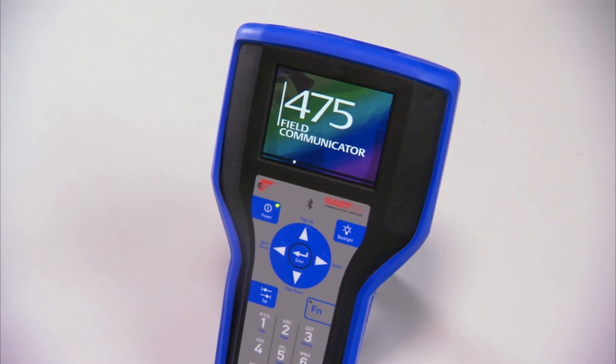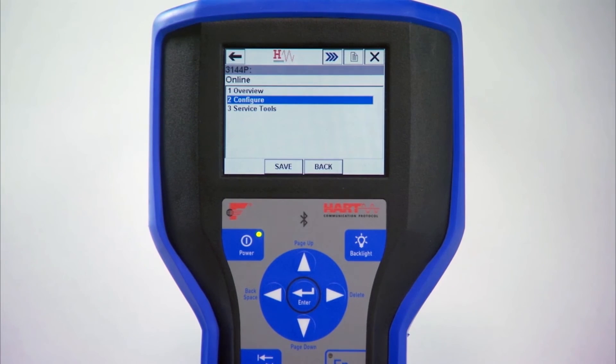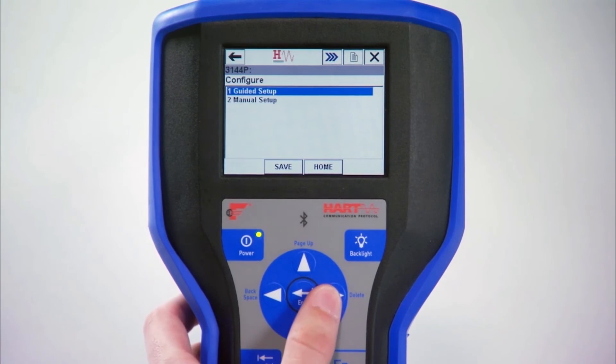First, attach the communicator to the transmitter's power inputs. Note that between 250 and 1100 ohms resistance must be in series for correct functioning. From the home screen on a 475, click Configure, Guided Setup, and then Configure Sensor.